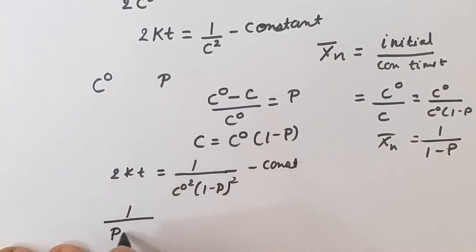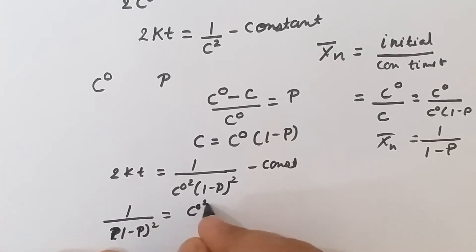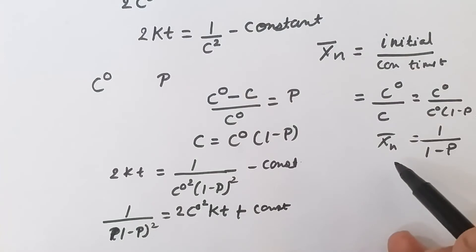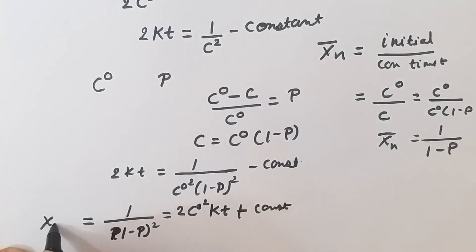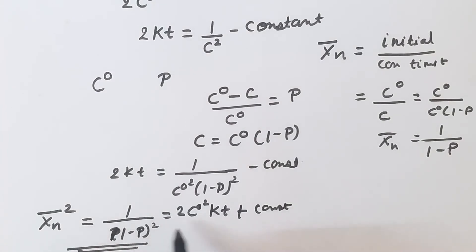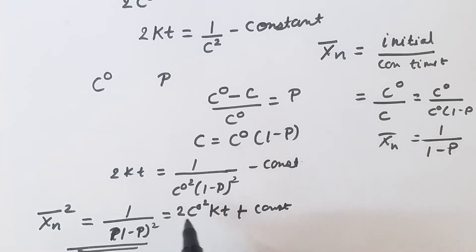Rearranging: 1/(1–p)² = 2c₀²·kt + constant, and since 1/(1–p) = x̄ₙ, we get x̄ₙ² = 2c₀²·kt + constant. This is the kinetic result for non-catalyzed polycondensation: the degree of polymerization is proportional to the square root of time (and proportional to c₀²·t).